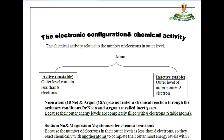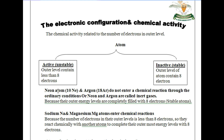Atoms are divided into active atoms and inactive atoms. Active atoms have an outermost energy level containing less than 8 electrons. Inactive atoms have an outermost energy level containing 8 electrons, except for helium.